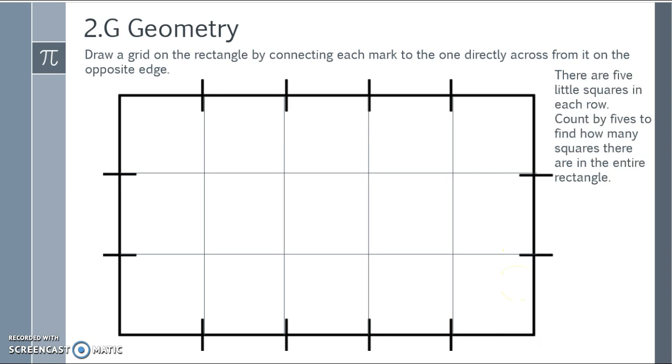There are 5 little squares in each row. Count by 5 to find how many squares there are in the entire rectangle. So 5, 10, 15 of them. So this is another way that we can count how many there are.